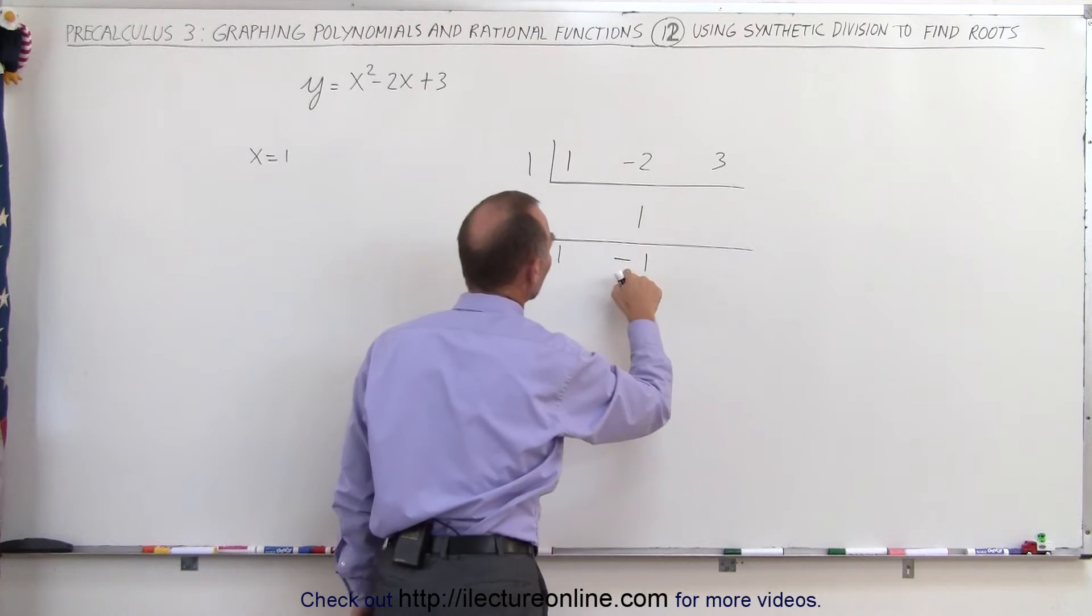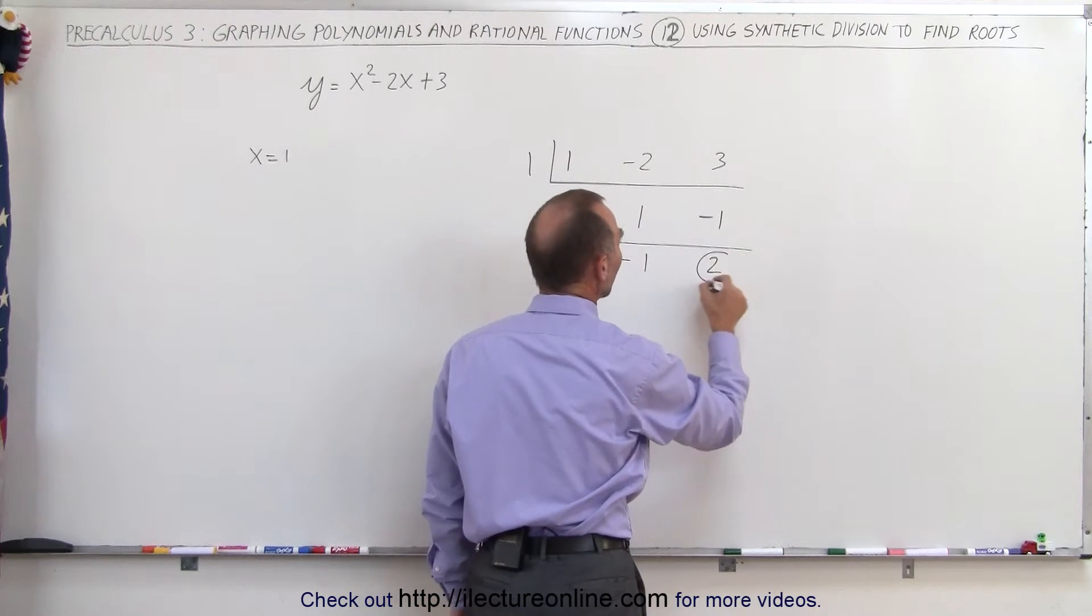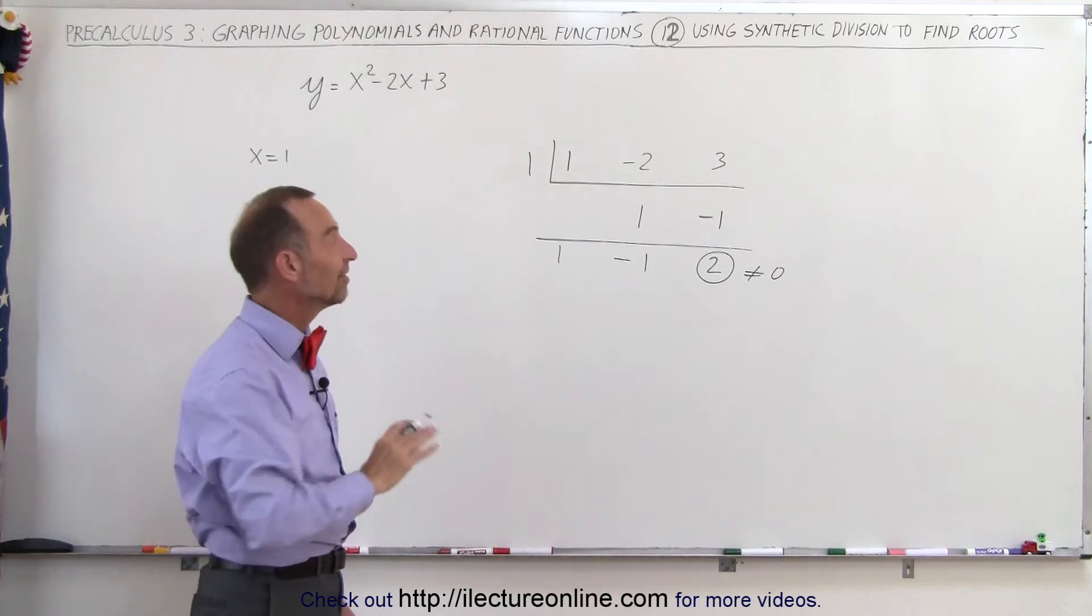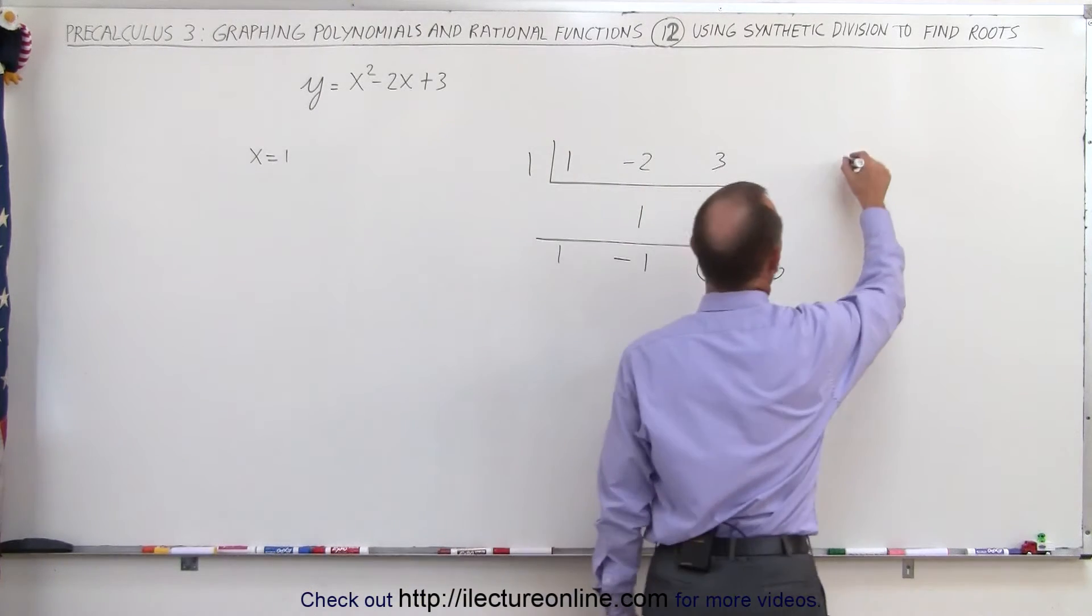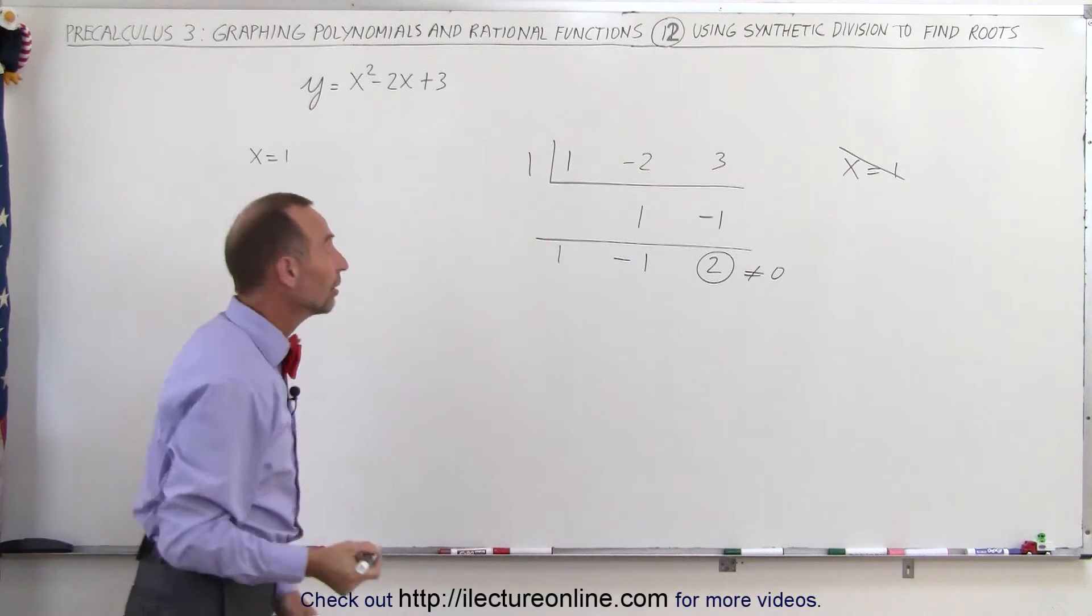We add the two together, we get negative 1. We go 1 times the negative 1, we get negative 1, add it together, we get 2. Since this number is not equal to 0, that means x equals 1 is not a root. So x equals 1 is not a root, and then we try again, we try something different.